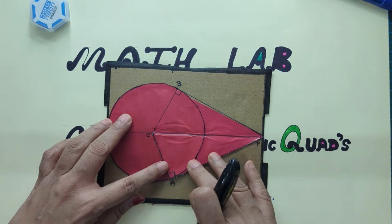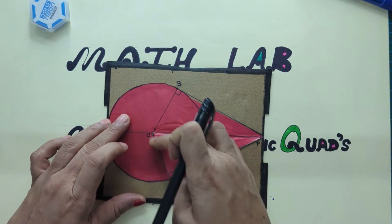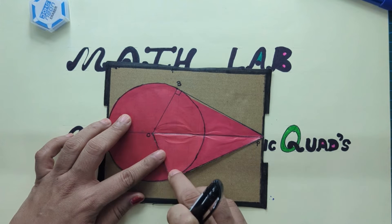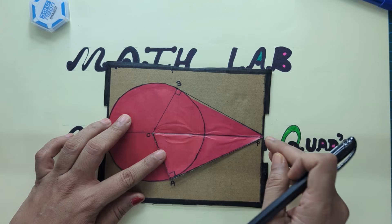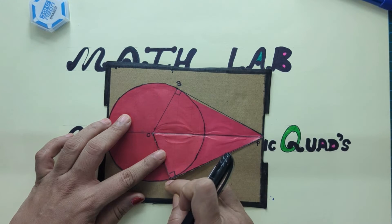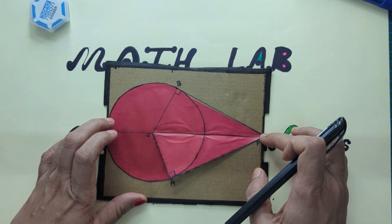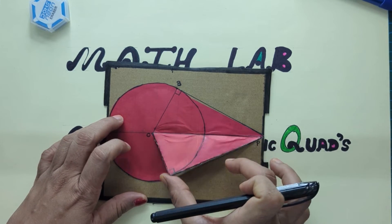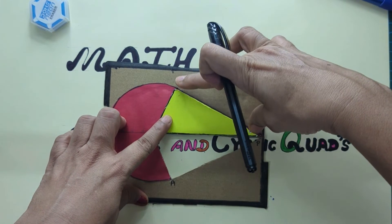So about tangents: the first point is that the radius and tangent at the point of contact are perpendicular. The second point is that the lengths of tangents drawn to a circle from an external point are equal — see how this length perfectly superimposes over this.